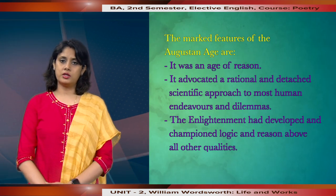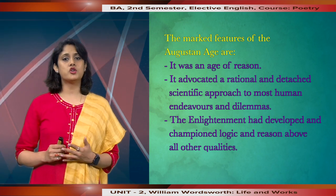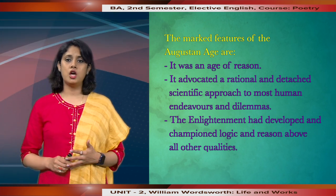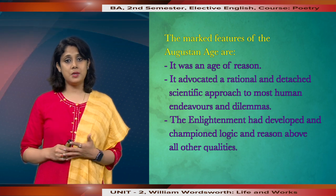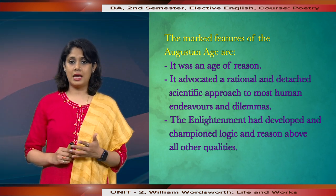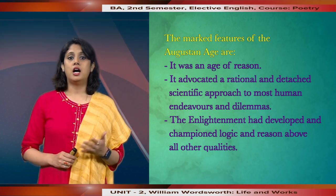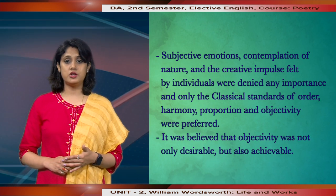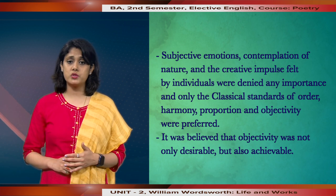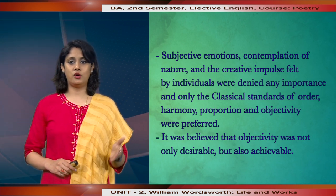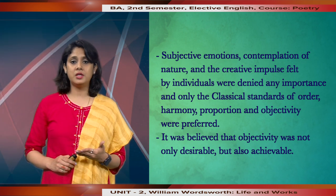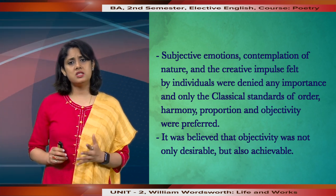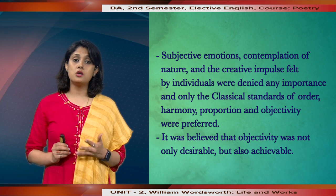The marked features of the Augustan age are: it was an age of reason. It advocated a rational and detached scientific approach to most urban human endeavours and dilemmas. The Enlightenment had developed and championed logic and reason above all other qualities. Subjective emotions, contemplation of nature and the creative impulse felt by individuals were denied any importance, and only the classical standards of order, harmony, proportion and objectivity were preferred. It was believed that objectivity was not only desirable, but also achievable.